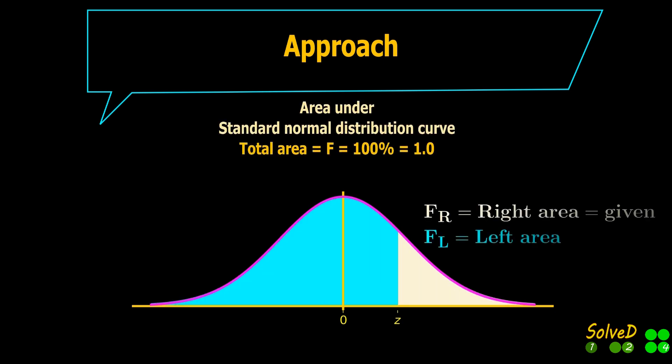The total area under the curve is 1. Therefore, area to the left of Z equals 1 minus area to the right side.